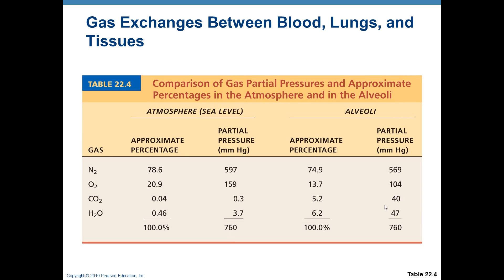Inside the alveoli of your lungs, the numbers are a bit different because CO2 is constantly being released and oxygen gets absorbed quickly into the capillaries. Inside the alveoli, the partial pressure of O2 is 104 mm Hg and CO2 is about 40 mm Hg.